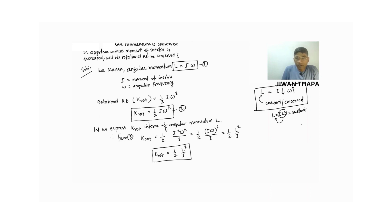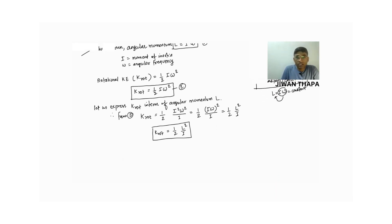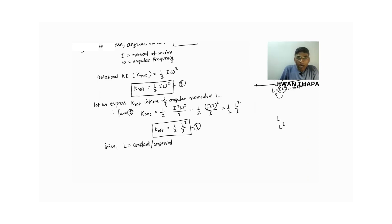Now, what we find from the equation: angular momentum is conserved or is constant. Let us call it equation 3. Since L equals constant — if L is constant, then L squared is again constant, and half is constant. Therefore from equation 3, rotational kinetic energy is inversely proportional to I, that is moment of inertia.